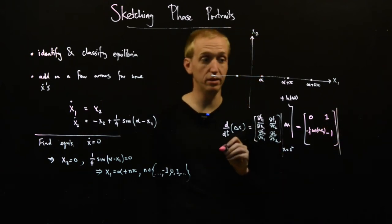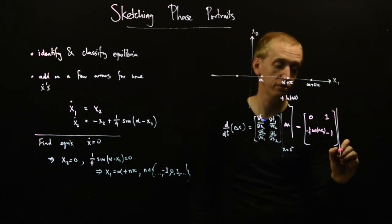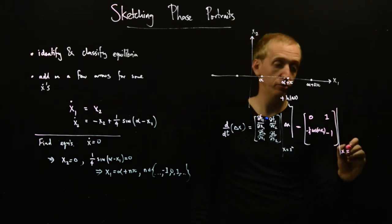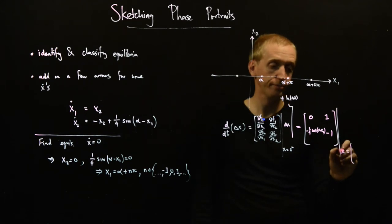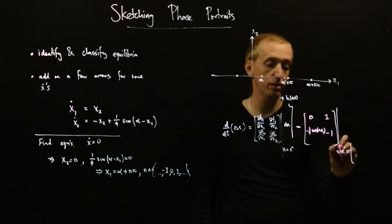And now we substitute in our equilibrium points, and our equilibrium points are given by... So every one of our equilibrium points is of the form.